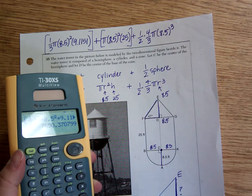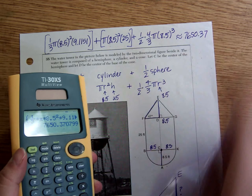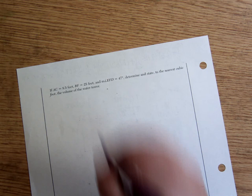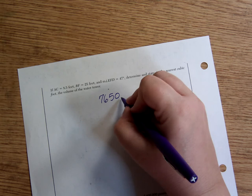7,650.37. I'm going to go ahead and turn over my paper to where they asked me to do it. And they said, do it to the nearest cubic foot. So 7,650.37 just rounds to 7,650 cubic feet.